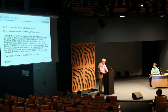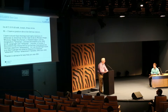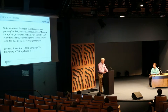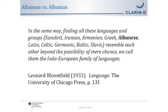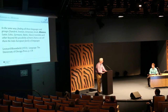Brian asked: 'Is there any way to gauge the relative frequency of German Albanisch versus Albanesisch between 1850 and 1950?' We get inquiries like this about once a month, but rarely are they put so well and the homework defined so clearly. The passage Brian was alluding to is a quote from the famous introduction to linguistics by Leonard Bloomfield, where he writes: 'Finding all these languages and groups — Sanskrit, Iranian, Armenian, Greek, and now Albanese, Latin, Celtic, Germanic, Baltic, Slavic — resemble each other beyond the possibility of mere chance. We call them the Indo-European family of languages.' So this is where the trouble started.